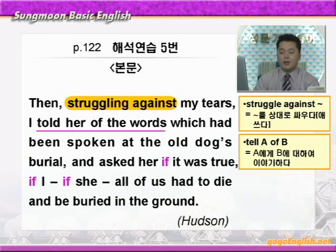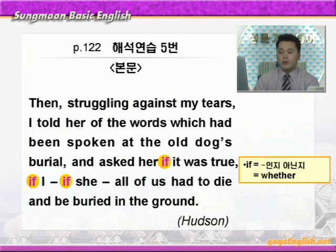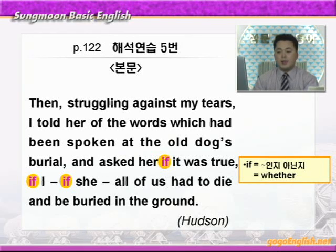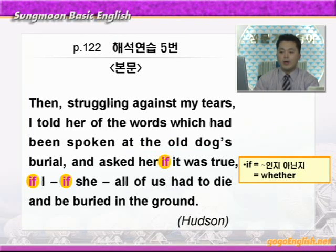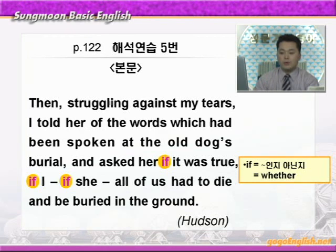'and asked her' — 그리고 그녀에게 물었다. 'if it was true' — 여기 if하고 아랫줄에 나와있는 두 개의 if에 모두 동그라미 쳐보세요. 세 개의 if는 모두 명사절을 이끄는 접속사로 '뭐뭐인지 아닌지' 그래서 whether와 뜻이 같습니다. 그러니까 그것이 사실이냐고 물었다. 'if I, if she, all of us had to die' — 나나 그녀나 우리 모두가 죽어야 하느냐고. 'and be buried in the ground' — bury는 땅에 묻다, 매장하다 이런 뜻인데 여기서는 수동태니까 땅에 묻혀야 하느냐고 그녀에게 물었다.